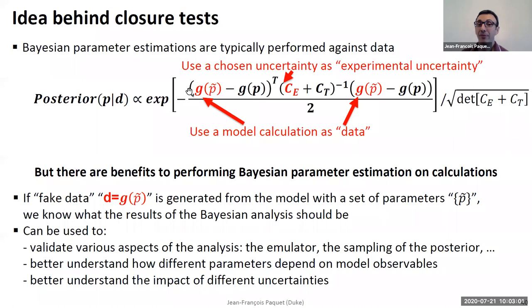Now there are benefits to actually not use data, but instead simply replace data by model calculations. And the benefit is that if you do this, you know what the result of your Bayesian analysis should be. It should be, if you use some parameters P tilde as data, then you know that your posterior should return the value of these parameters.